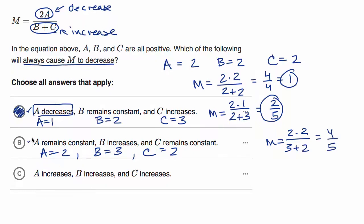This is looking pretty good, at least just on this case we tried. We could see that this is consistent with what we just described. A remaining constant doesn't change the numerator. B increasing and C remaining constant does increase the denominator. So case B leaves the numerator unchanged, but it increases the denominator, which will lower the value of a fraction. So I like this choice as well.